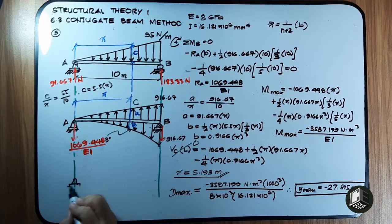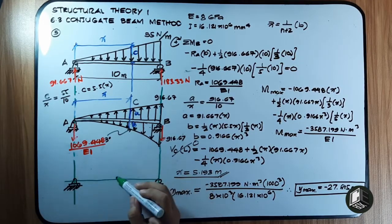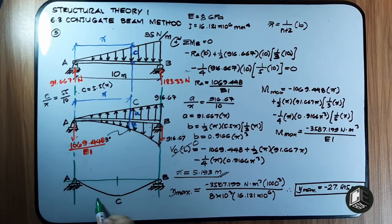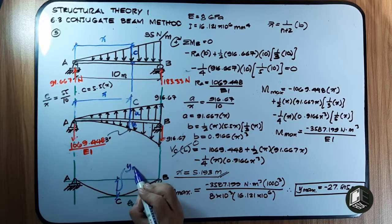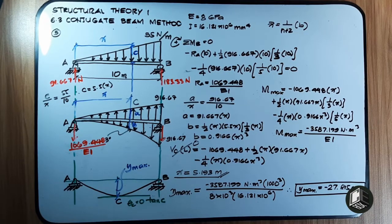Let's draw the summary. The beam goes from A to C to B, with C located at x = 5.193 m from A — just past the midpoint. The slope (tangent) at C is horizontal, equal to zero, confirming that C is the location of the maximum deflection. This concludes Example Number 5 and the last example for the conjugate beam method. Thank you for watching!